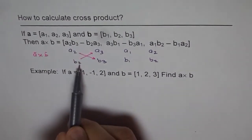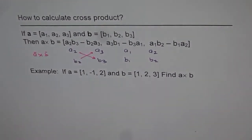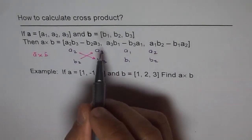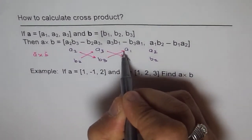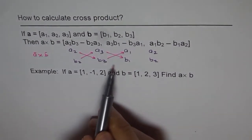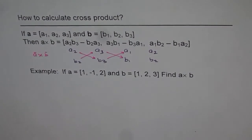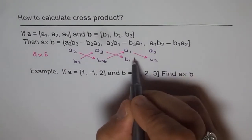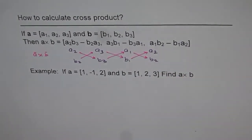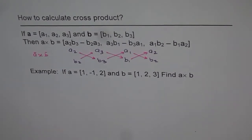For the x-direction component: a2·b3 minus b2·a3 — that is your first direction number. For the second component: a3·b1 minus b3·a1. Then multiply a1·b2 minus b1·a2 for the third component. That gives your cross product, and it matches the formula written at the top. Now we'll do it with the help of an example.